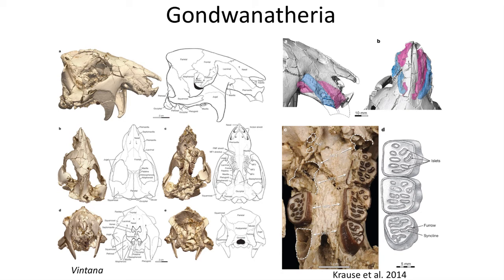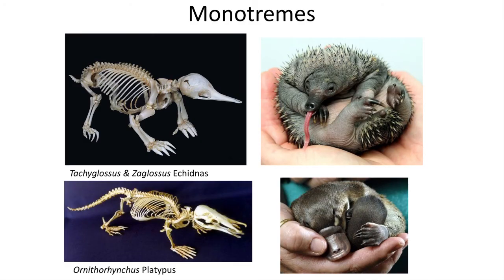Often depicted as the first or second branch on the mammal tree are the Monotremes, a group that includes three living genera: Tachyglossus and Zaglossus, the echidnas found in Australia and Tasmania, and Ornithorhynchus, the platypus found in the rivers along the east coast of Australia. Monotremes lay eggs, and hence when they were first discovered they were quickly realized to belong to a primitive group of mammals called the Monotremes.